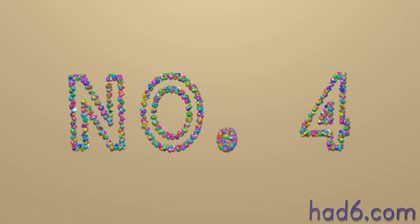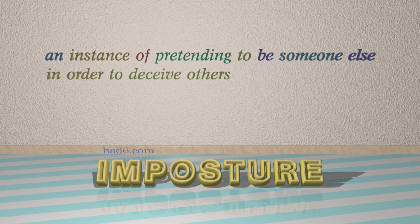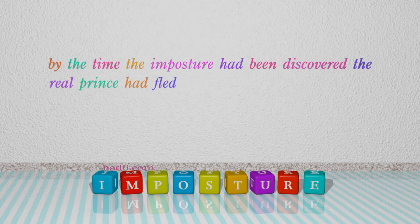Number 4: Imposture. Which means: An instance of pretending to be someone else in order to deceive others. For example: By the time the imposture had been discovered, the real prince had fled.